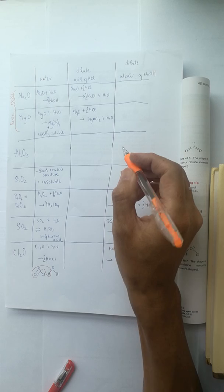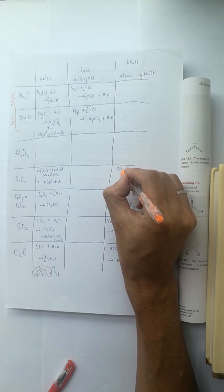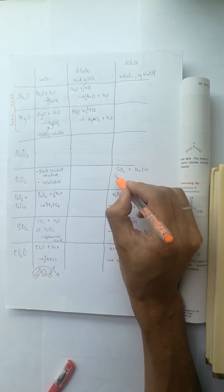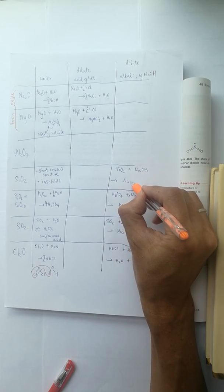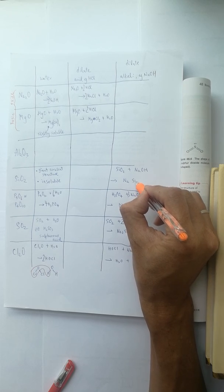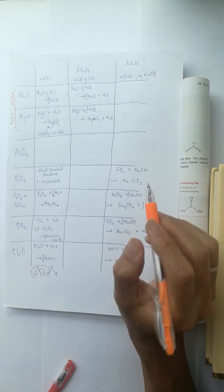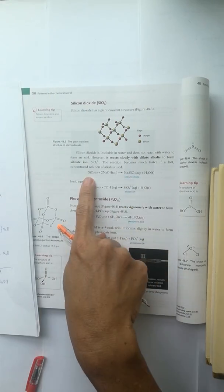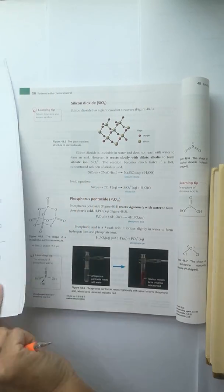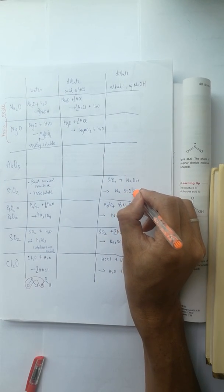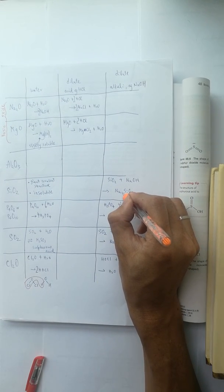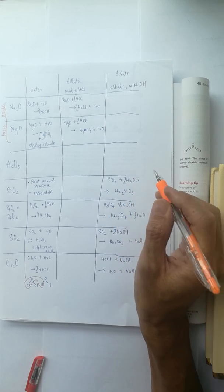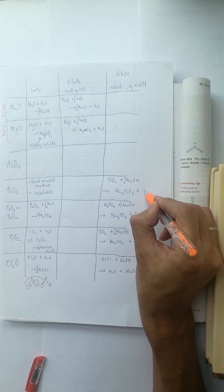However, the SiO2 readily reacts with the sodium hydroxide. It forms the Na2SiO3, the SiO3 2- ion, and water is released.